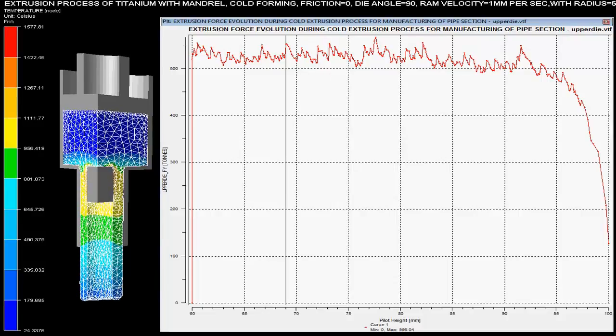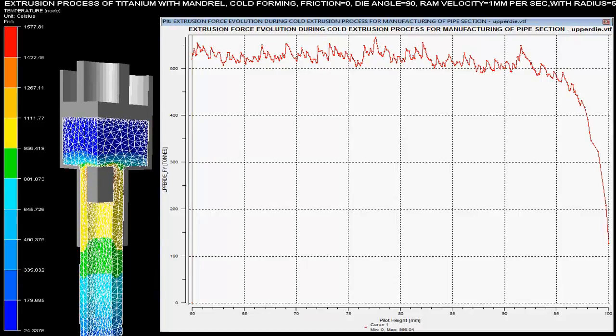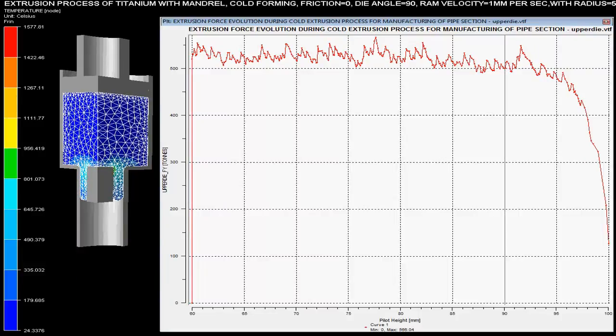Velocity is set as 1 mm per sec with the radius of 5 mm. Die angle is specified as 90 degrees and it is specified that there is no friction during this cold extrusion process.